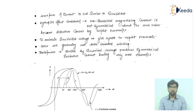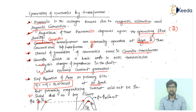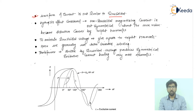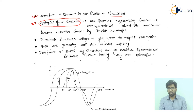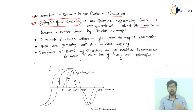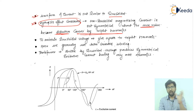The waveform of the current is not similar to a sinusoidal — as seen in the diagram, IM does not have a proper sinusoidal curve. If we consider the hysteresis effect, the non-sinusoidal magnetizing current is not symmetrical about its maximum value. This distortion is caused by the triplet harmonics.